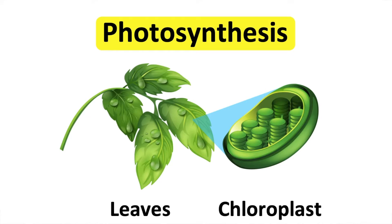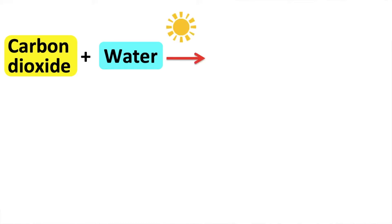Specifically in the chloroplasts of leaves containing chlorophyll. The equation for photosynthesis is carbon dioxide from the air, water and light energy usually from sunlight.